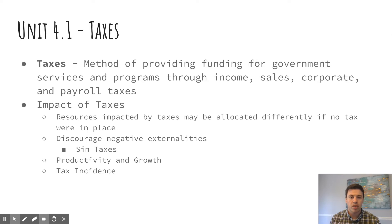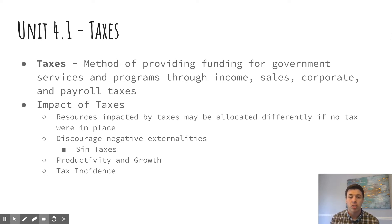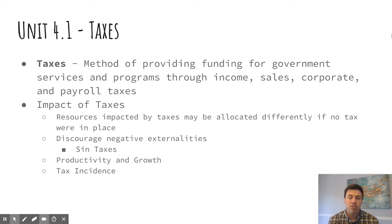We're going to look at taxes here beginning with that, and then we're going to look at government spending, along with a lot of other things within these five or six videos for Unit 4. Taxes by definition is the funding that comes in to fund the government — all the services, all of the programs that exist, all those public goods we talked about in Unit 3. Those need to be paid for and they're paid through taxes. Individuals pay through income taxes, sales taxes at the state level, and corporate payroll taxes are taxes on businesses. Those tax structures pay for the government and its functions.